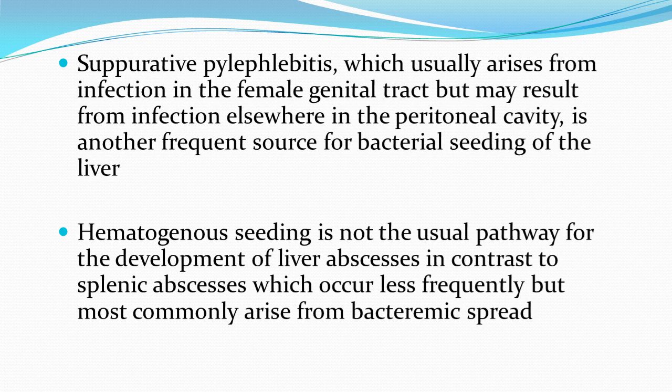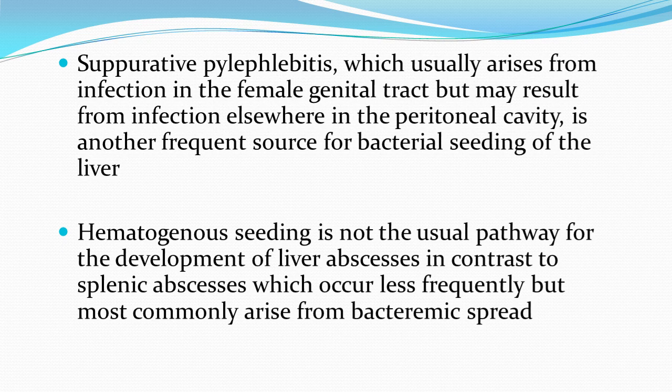Suppurative pylephlebitis, usually arising from infection in the female genital tract or elsewhere in the peritoneal cavity, is another frequent source of bacterial seeding of the liver. Hematogenous seeding is not the usual pathway for liver abscesses, in contrast to splenic abscesses, which occur less frequently but more commonly arise from bacteremic spread.